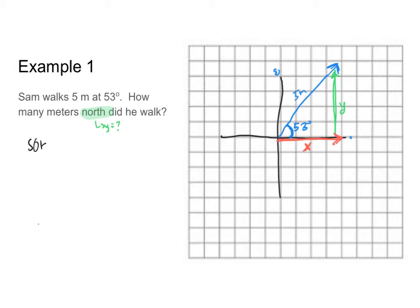So SOH CAH TOA: sine of an angle is equal to opposite over hypotenuse, cosine is equal to adjacent over hypotenuse, and tangent is equal to the opposite side over the adjacent side, with the sides of course being the lengths of each side.